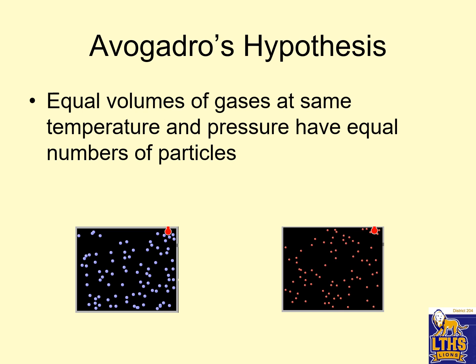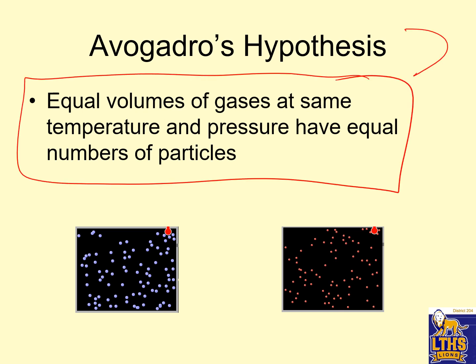Another concept you need to know is Avogadro's hypothesis. Avogadro's hypothesis states that equal volumes of gases at the same temperature and pressure have equal numbers of particles.